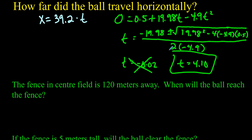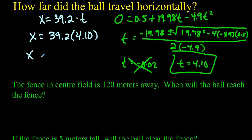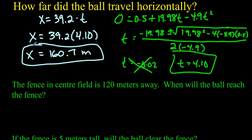Now we can answer how far the ball traveled horizontally. We plug t equals 4.10 into x equals 39.2 times t. That gives us 160.7 meters. So we solved for time using the y equation, then plugged that back into the x equation to find how far the ball traveled.